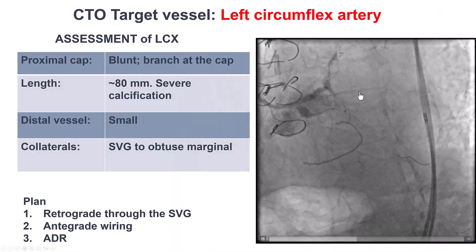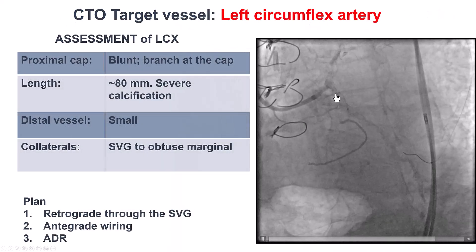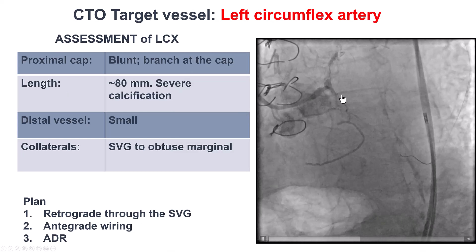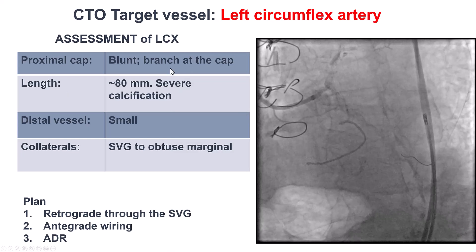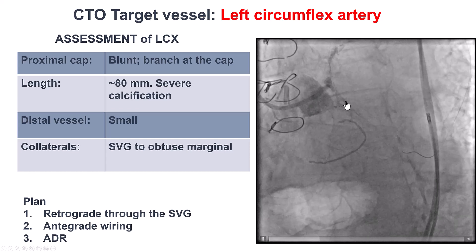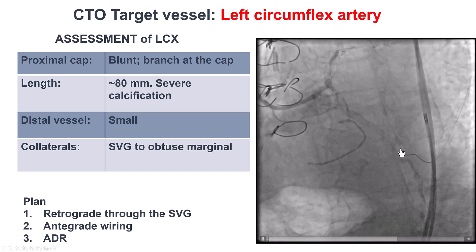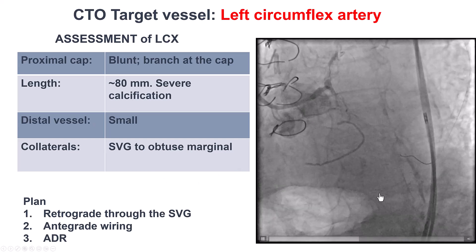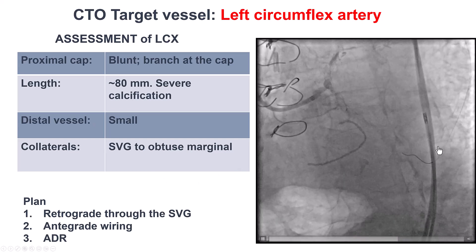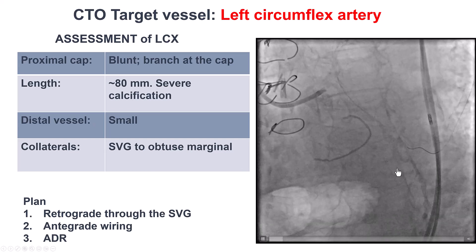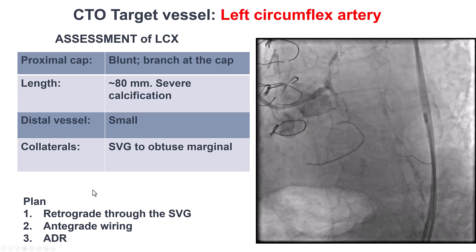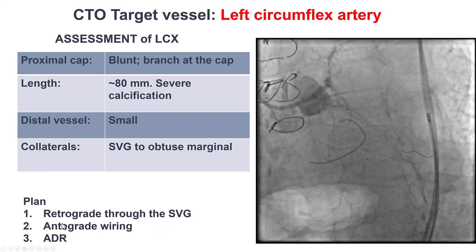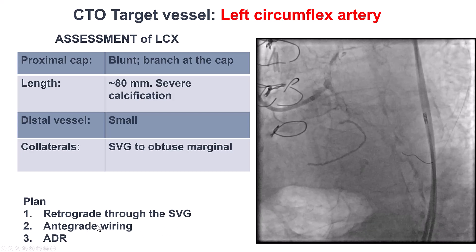What we have here is essentially a CTO of the proximal circumflex. There is significant calcification, the proximal cap is blunt, the length of the occlusion is fairly long, and the distal vessel is small, diffusely diseased, and is filling through the aneurysmal vein graft. Our plan was to start with retrograde through the aneurysmal vein graft. If that didn't work, try antegrade wiring or ADR.